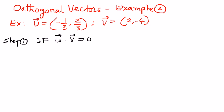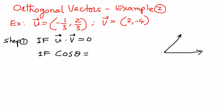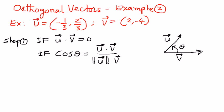If u dot v is not equal to 0, then we will find what is the angle between them. If we want to find the angle between vectors u and v, the condition we know is: cosine theta is given as vector u dot vector v divided by the magnitude of vector u times the magnitude of vector v.